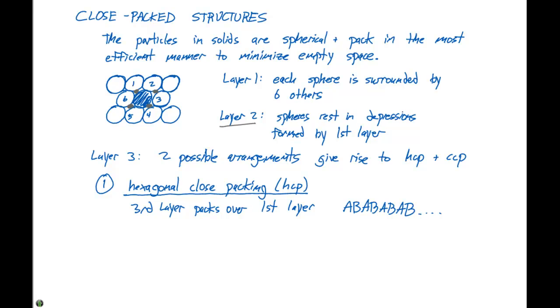The second arrangement is called Cubic Close Packing, or CCP. And in Cubic Close Packing, the third layer packs over the holes formed by the first two layers.